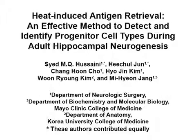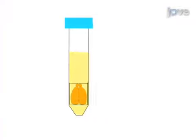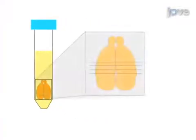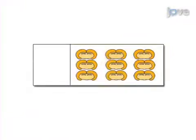The overall goal of this procedure is to perform antigen retrieval on hippocampal brain tissue to better visualize the progenitor cell types giving rise to newborn neurons. This is accomplished by first harvesting the perfused brain from mouse, cutting thin coronal sections and mounting these sections on a glass slide specifically designed to adhere strongly to the tissue.